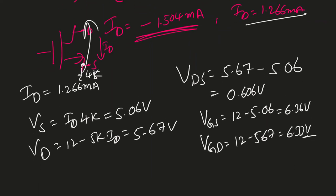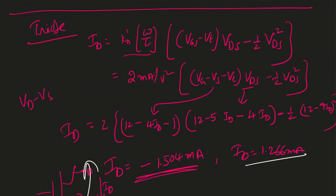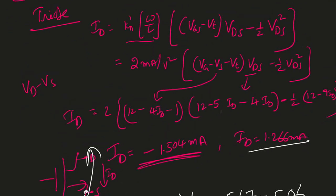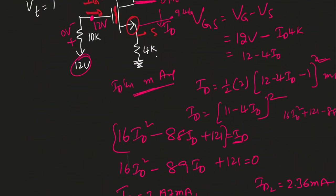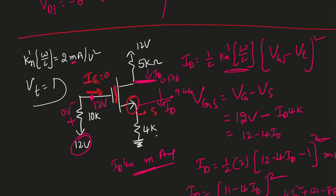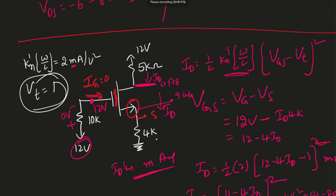To confirm triode mode of operation, VGD must be greater than the threshold voltage VT. Here VGD = 6.33 V and VT = 1 V, as given in the problem data. Since 6.33 V > 1 V, we confirm this transistor is indeed working in the triode region of operation.